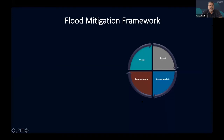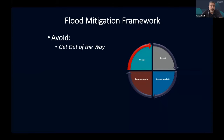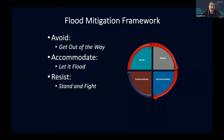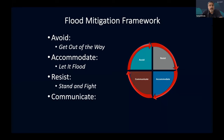In 30 seconds or less, the framework has four components. First: avoid — get out of the way. Second: accommodate — let it flood, which is not in our American bones. Third: resist — stand and fight, which is most of our tradition in the United States for dealing with flood risk, particularly in coastal areas. Fourth, and most under-emphasized but most important: communicate — tell the story of risk.